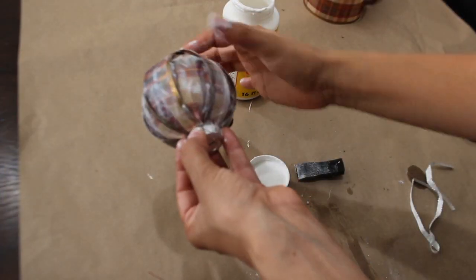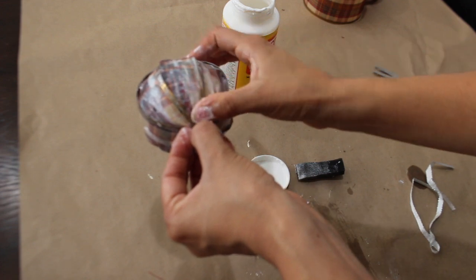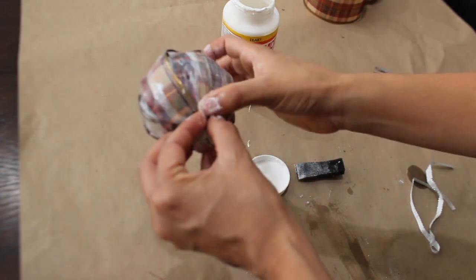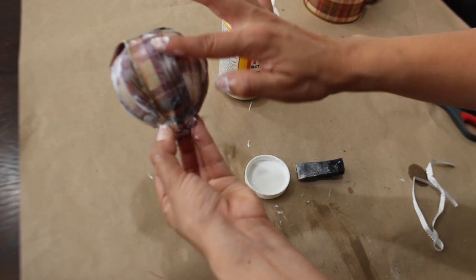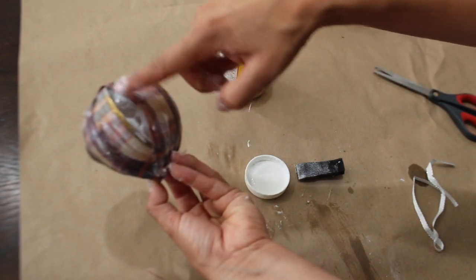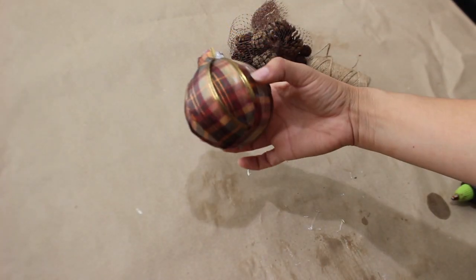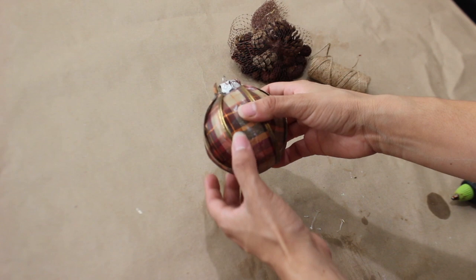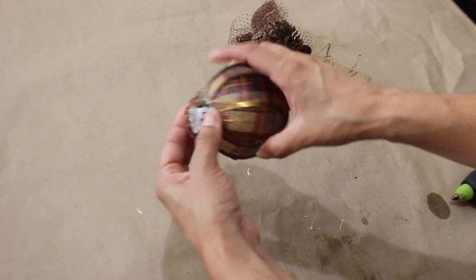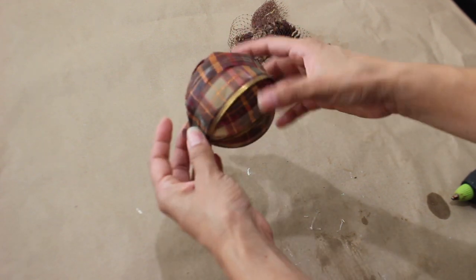So once you get it all on there, I just kind of start pushing this with my fingers up at the top, and what I'm going to do is just add one little strip right there. So this is almost done drying. The longer you wait for it to dry, the easier it is to put the ribbon where you want it in place.